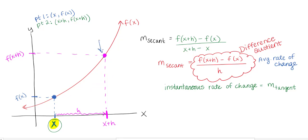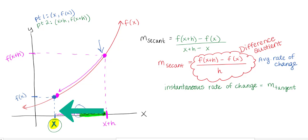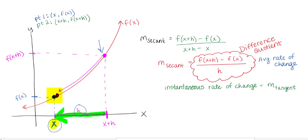If my second point is h units away, it might be pretty far away — I don't want it far away. I want my point as close as possible to the first x value. I'm basically saying I want to move this horizontal distance back so it's as close to x as possible. I want to bring h in so it's as close to the first point as possible. I can use limits to help me — limit as h approaches 0.